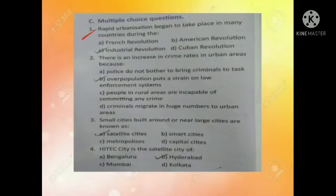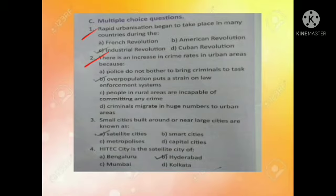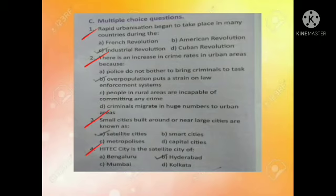First one: rapid urbanization began to take place in many countries during the industrial revolution. Second one: overpopulation puts a strain on law. Third one: small cities around or near large cities are known as — A, satellite cities. Fourth one: high-tech city is the satellite city of — B option, Hyderabad.